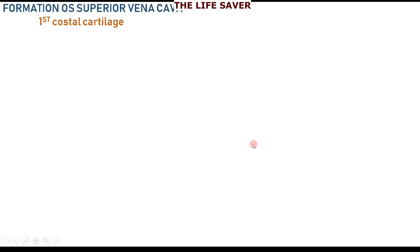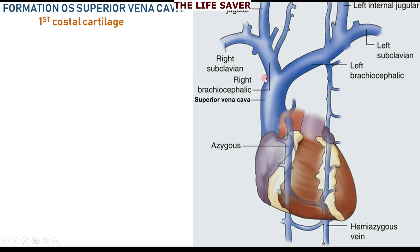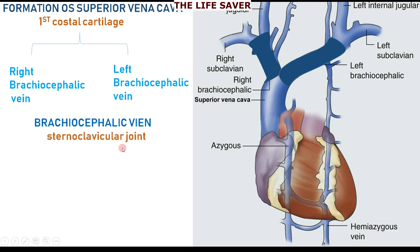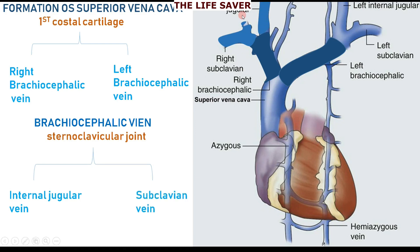Now we are going to discuss the formation of the Superior Vena Cava. It forms at the level of the first costal cartilage by the junction of the right brachiocephalic vein and the left brachiocephalic vein. The brachiocephalic vein itself is formed at the level of the sternoclavicular joint by the combination of the right subclavian vein and the internal jugular vein.